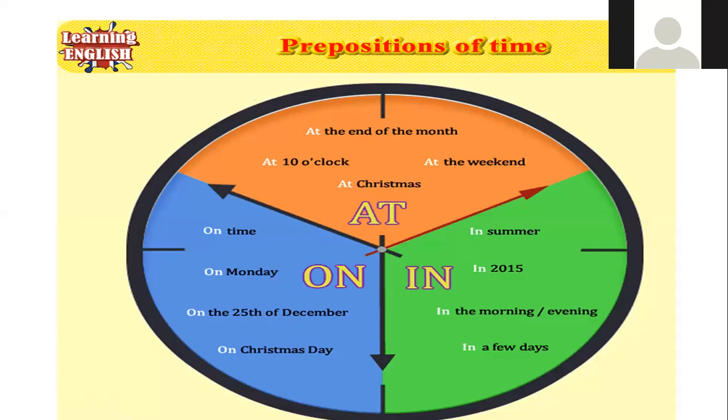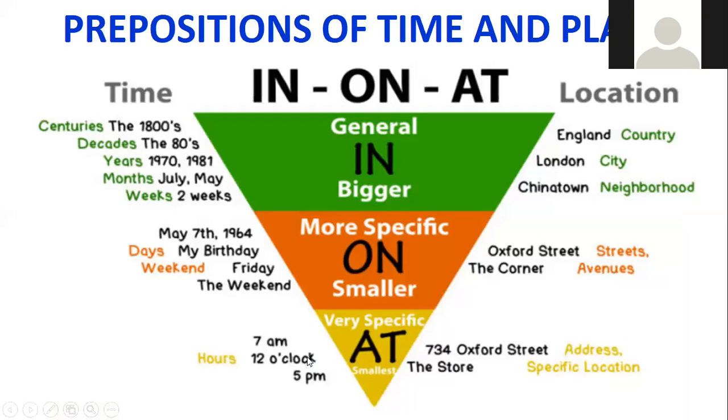So now I want to introduce you the prepositions of time. We can use at, in, on as prepositions of time. For example, at the end of the month, at 10 o'clock, at Christmas, at the weekend. In summer, in 2015, in the morning or in the evening, in a few days. On time, on Monday, on the 25th of December, on Christmas Day. And you can say, teacher, but how can I identify when I'm talking about time and when I'm talking about location?